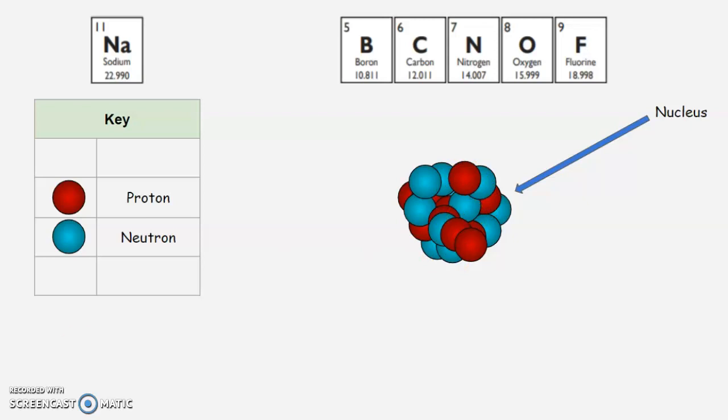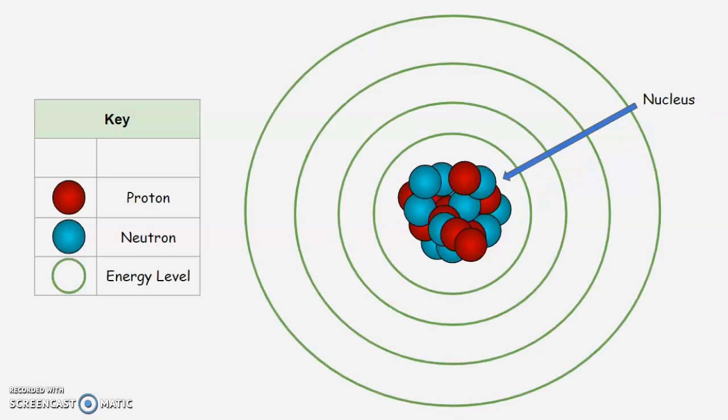Next, we have to look at our energy levels. Energy levels are the circles around the nucleus. So the nucleus is where we find the protons and the neutrons. The energy levels are on the outside. You may also hear these called electron shells.